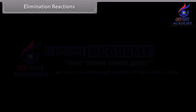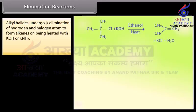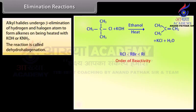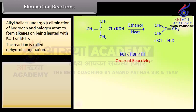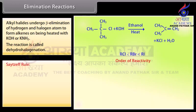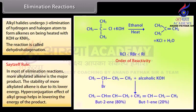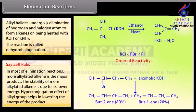Elimination reactions: alkyl halides undergo beta elimination of hydrogen and halogen atoms to form alkenes on being heated with KOH or KNH2. The reaction is called dehydrohalogenation. In most elimination reactions, the more alkylated alkene is the major product — Zaitsev's rule. The stability of the more alkylated alkene is due to its lower energy; the hyperconjugation effect of alkyl groups helps in lowering the energy of the product.